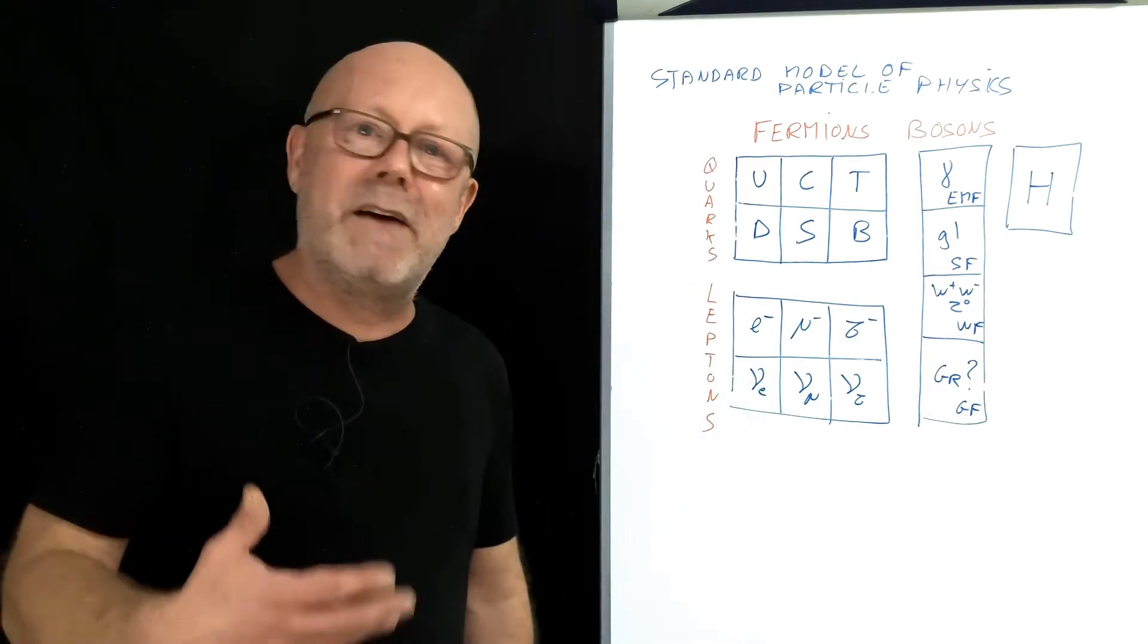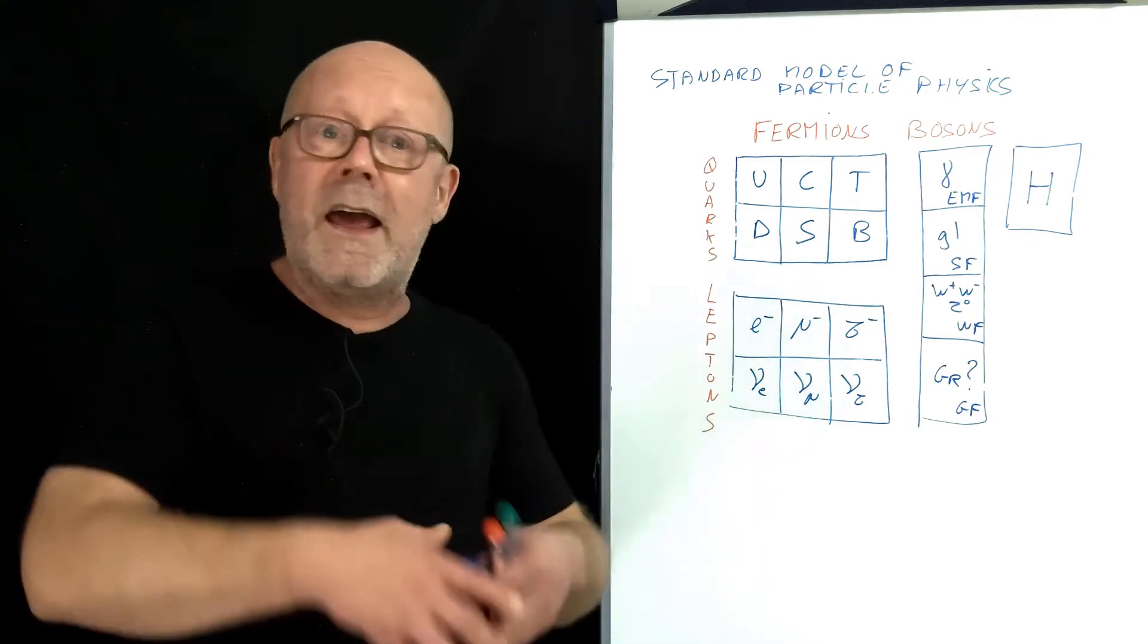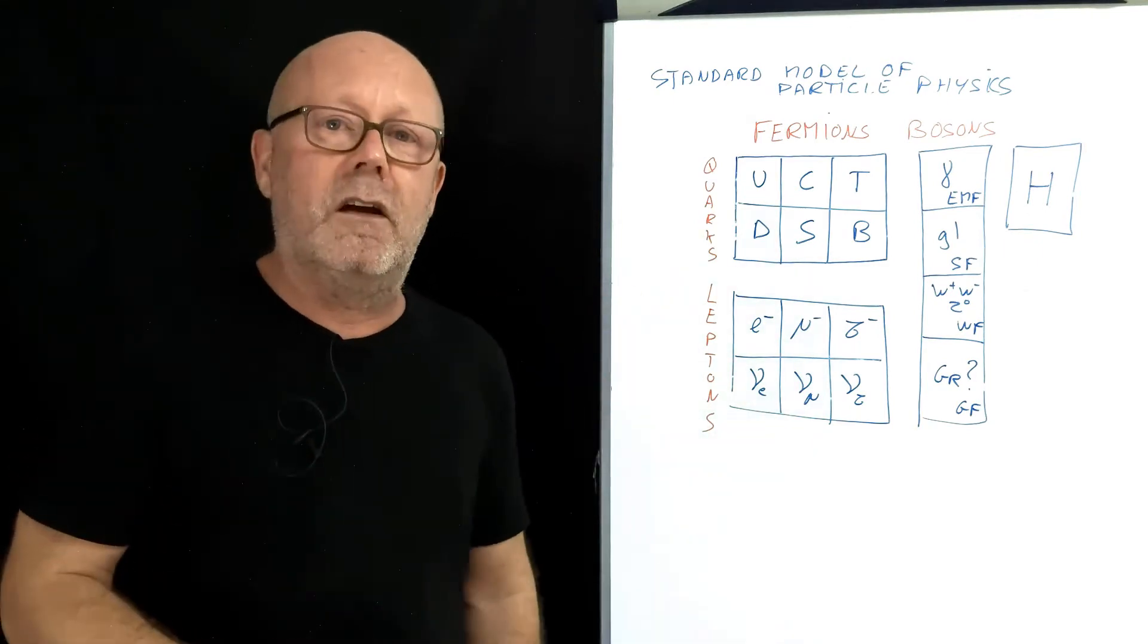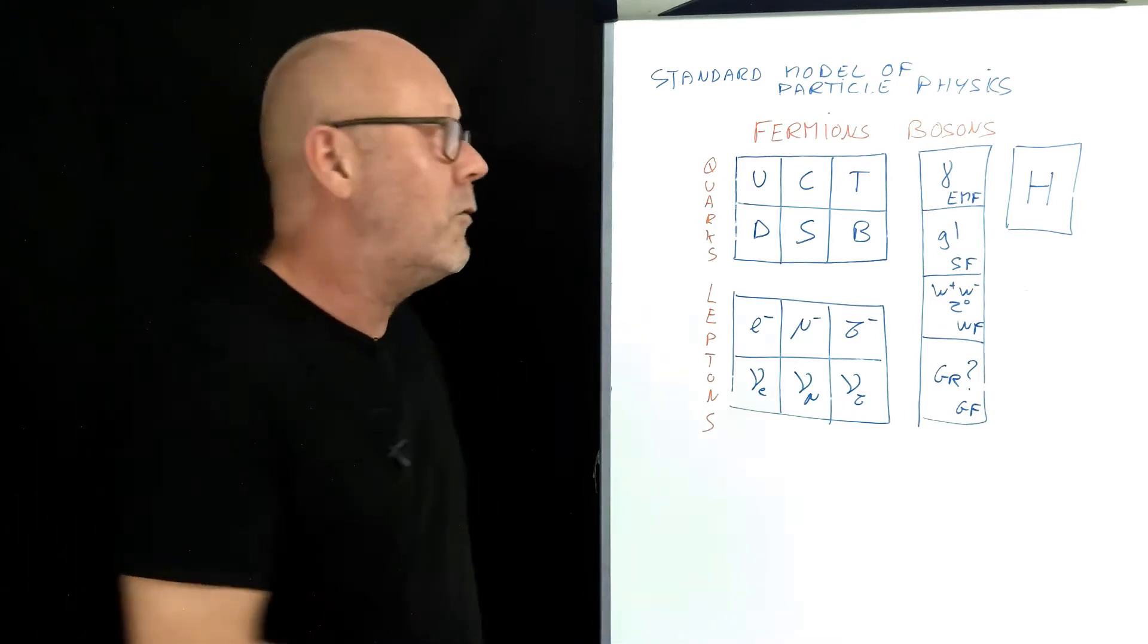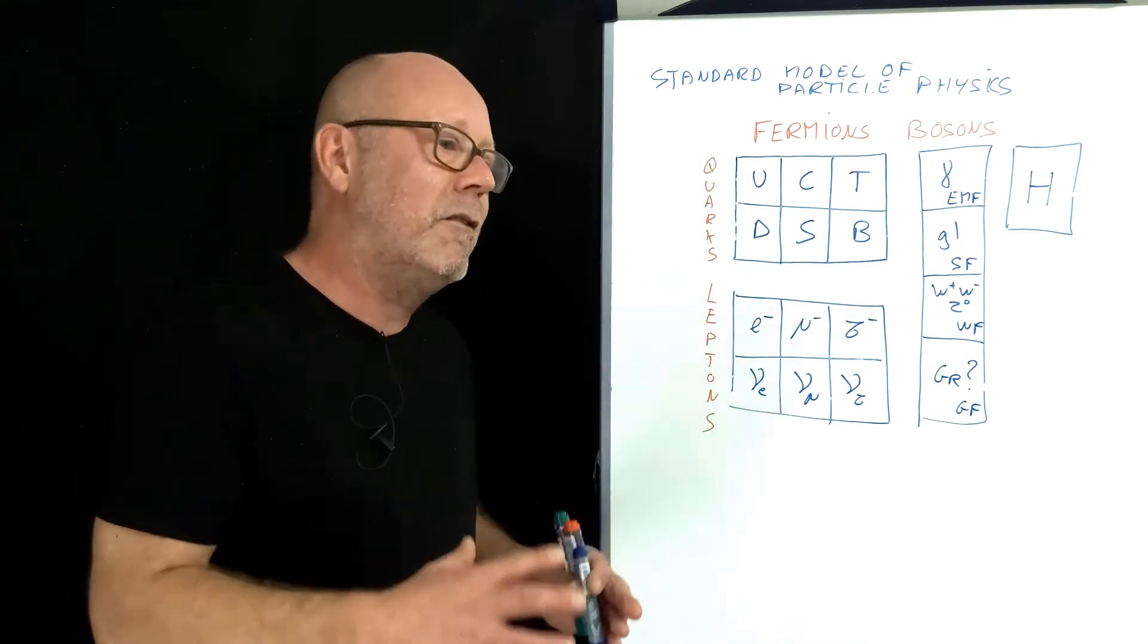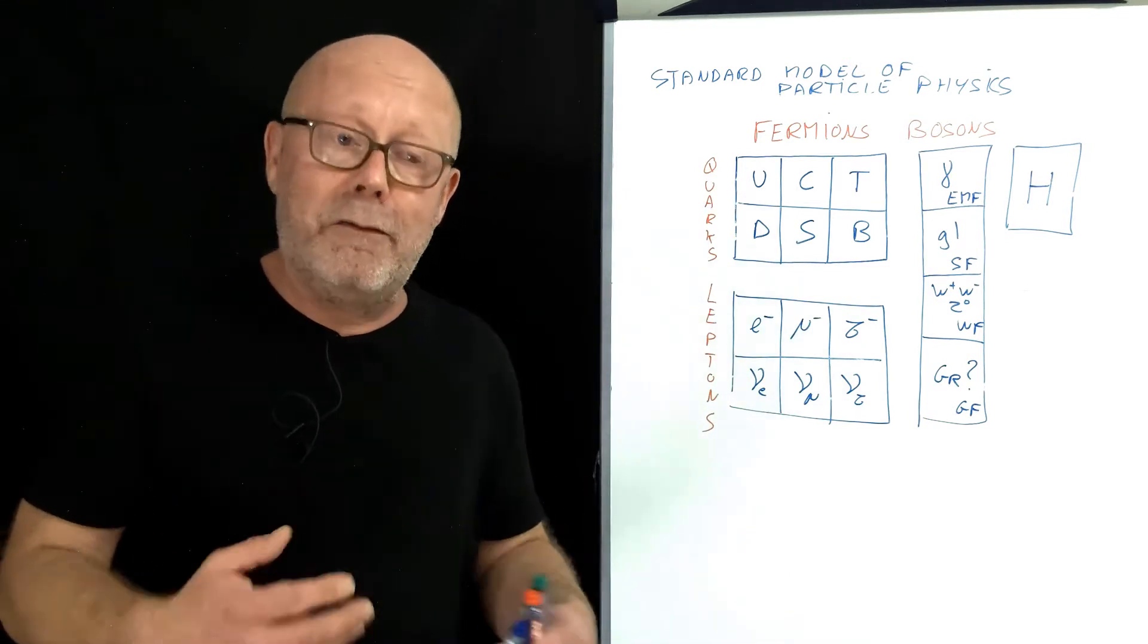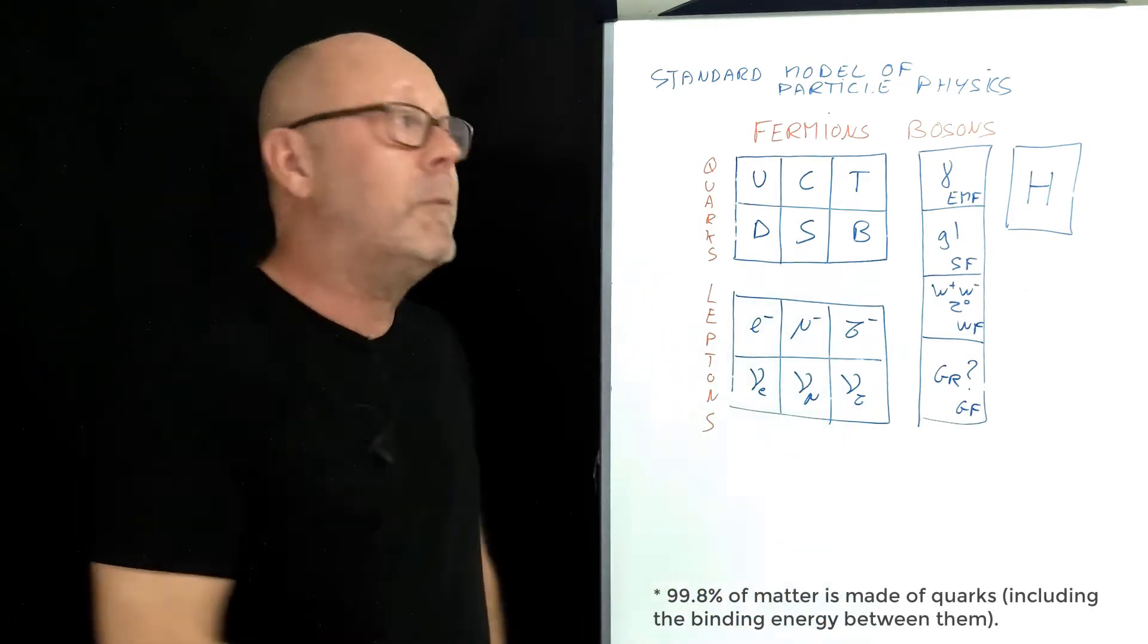You know that matter is made of atoms, right? And atoms are made of a nucleus and electrons surrounding the nucleus. The nucleus is made of protons and neutrons, and protons and neutrons themselves are made of quarks. 99.8% of the mass of an atom is the nucleus. Therefore, 99.8% of the mass of matter around you is made of quarks.